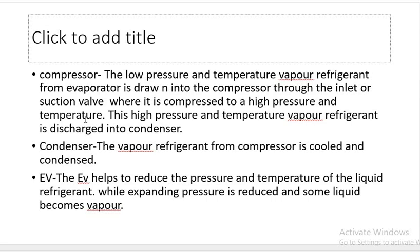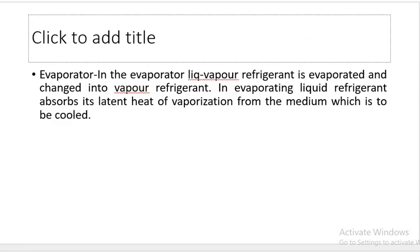This is the expansion valve. For the temperature, the pressure is reduced. As it is vaporized, it enters the evaporator. In the evaporator, the vapor refrigerant is absorbed — the liquid-vapor mixture evaporates.